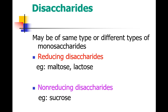Reducing disaccharides have a free functional group in their structure. Examples for reducing disaccharides are maltose and lactose. Non-reducing disaccharides do not have a free functional group in their structure. An example of a non-reducing disaccharide is sucrose.